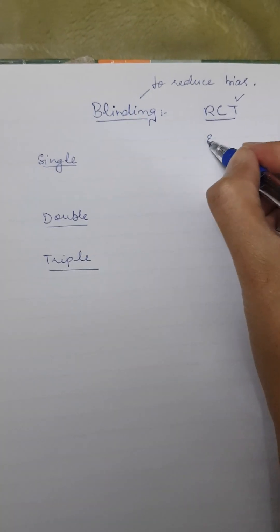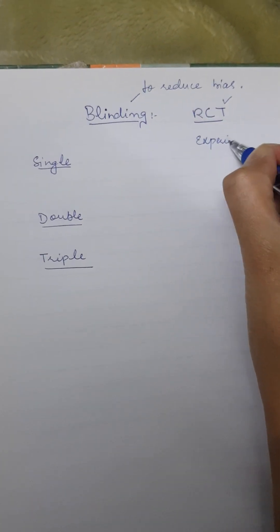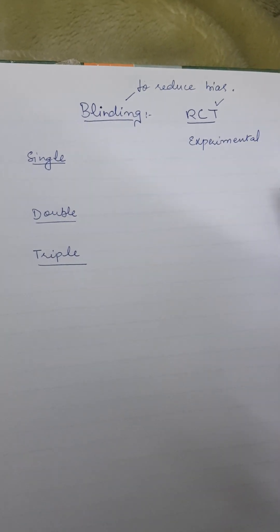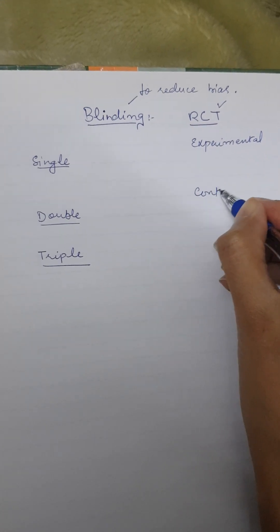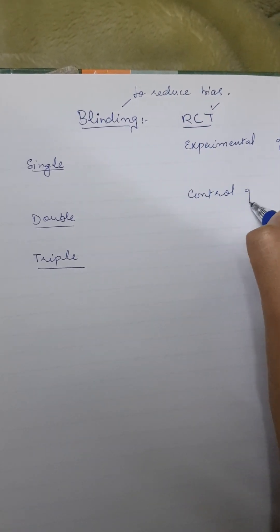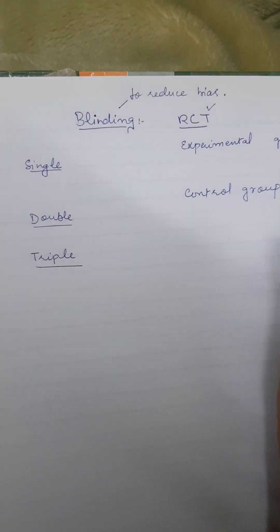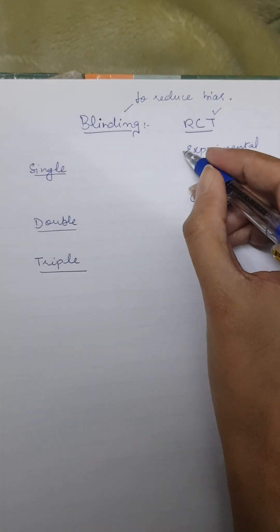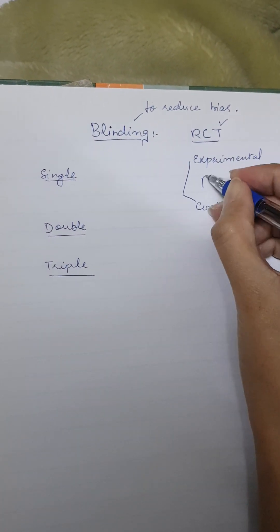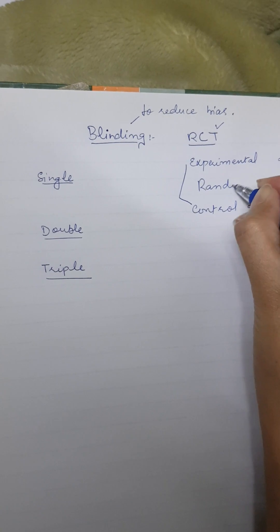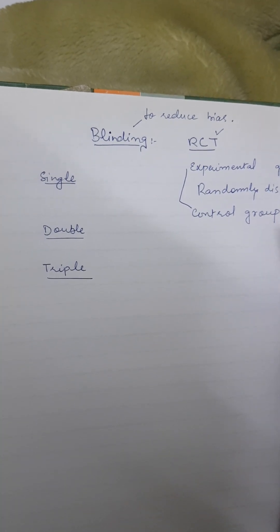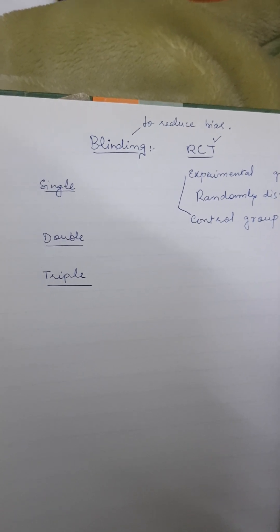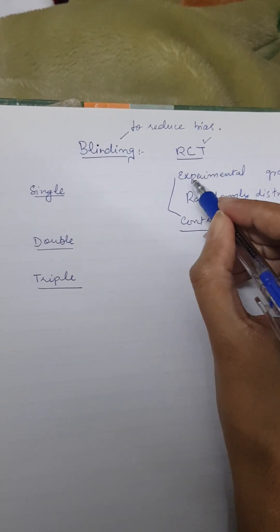So we have an experimental group and then there is a control group. And the subjects are randomly distributed among the control group and the experimental group.